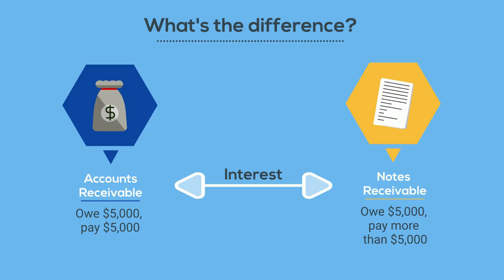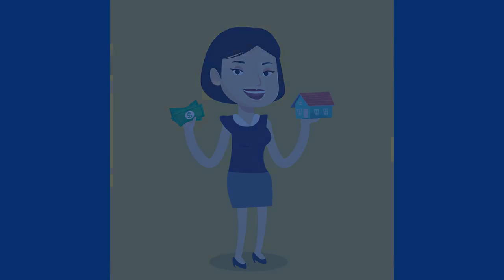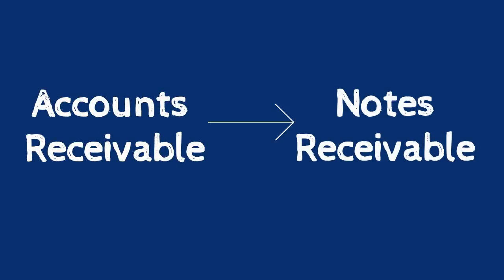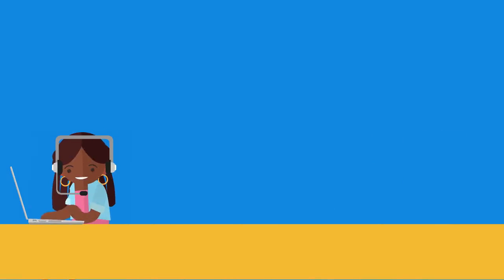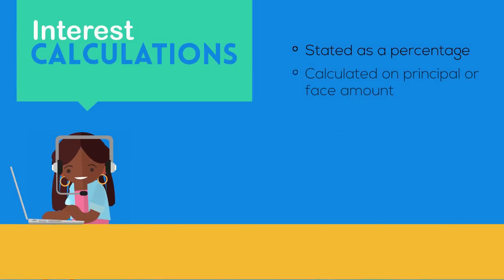Notes receivable requires the amount that was loaned or given to be paid back plus interest. A notes receivable may originate because we loaned someone money, or it may originate because one of our customers that has an accounts receivable with us cannot pay in a timely manner. We could convert the accounts receivable to a notes receivable and give them a longer amount of time to pay — however, we would now also charge them interest on top of the amount they owed us. How exactly do we calculate interest?